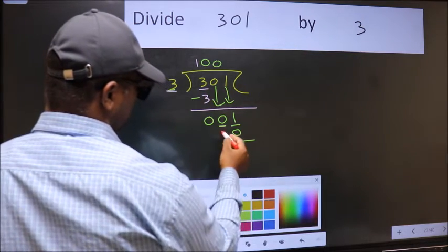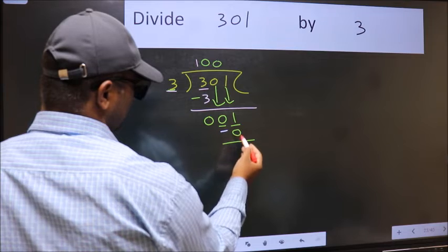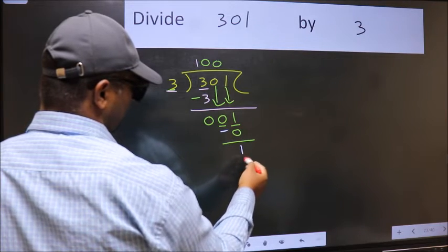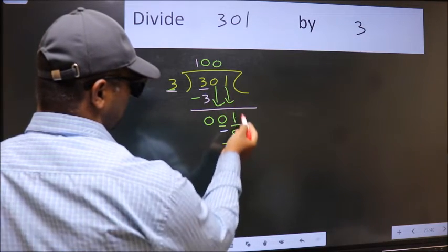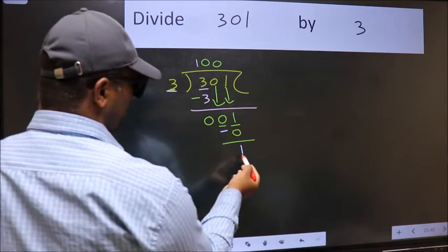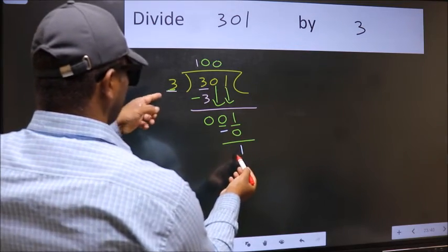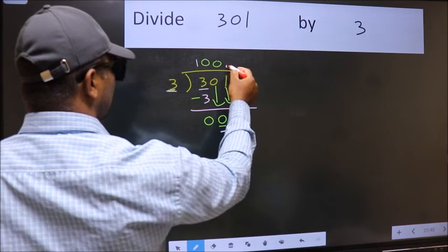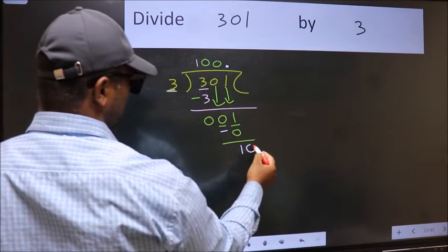Now we should subtract. 1 minus 0, 1. Over here, we did not bring any number down. And 1 is smaller than 3. So, now we can put dot and take 0.